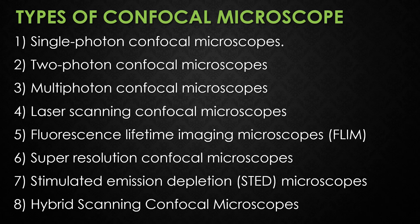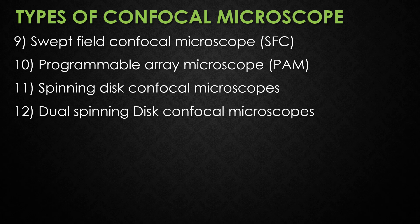There are nearly 12 types of confocal microscopes available: single photon confocal microscope, two-photon confocal microscope, multi-photon confocal microscope, laser scanning confocal microscope, fluorescence lifetime imaging microscope, super resolution confocal microscope, stimulated emission depletion microscope, hybrid scanning confocal microscope, swept field confocal microscope, programmable array microscope, spinning disk confocal microscope, and dual spinning disk confocal microscope.